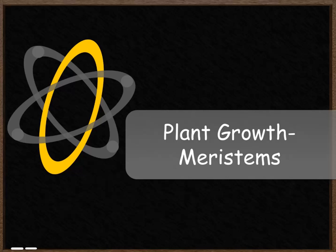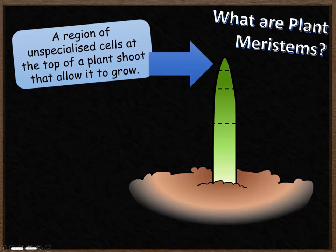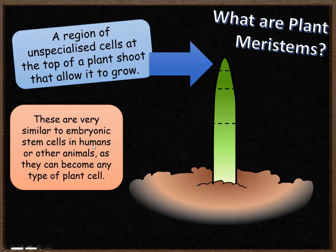Plant growth and meristems. In this video we're going to look at how plants grow, looking particularly at things called meristems, and then we're going to compare how plants grow and how animals grow. Plant meristems are a region of unspecialized plant cells at the top of a plant shoot. These are very similar to embryonic stem cells in humans or other animals, and they can become any type of plant cell. These cells can replicate quite quickly and therefore the plant is able to grow.